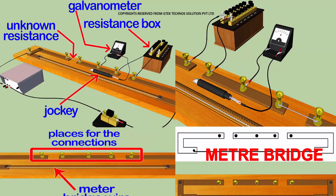Now let's talk about the meter bridge, which is used to find resistance. The meter bridge works on the Wheatstone bridge concept. You are able to see the galvanometer here, the resistance box, and this is your meter bridge with the jockey key. We are able to connect your unknown resistance here, and the known resistance here.